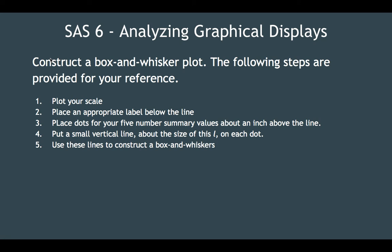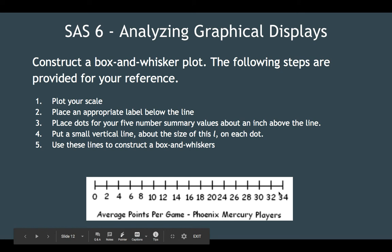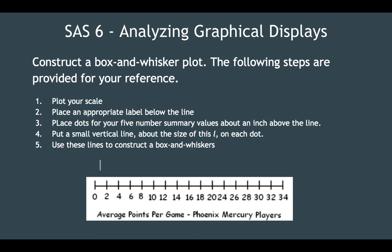So we're going to construct a box and whisker plot. Follow the steps: number one, plot your scale. Number two, place an appropriate label below the line. Number three, place dots for your five number summary values about an inch above the line. Step four, put a small vertical line on each dot, and use these lines to construct the box and whiskers. Here's your scale — a line for the minimum 0.8, one for the maximum 24.1, one for Q1, one for the median, and one for Q3. Now put lines above and below, and there's our box and whiskers.